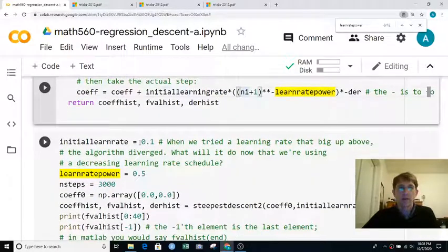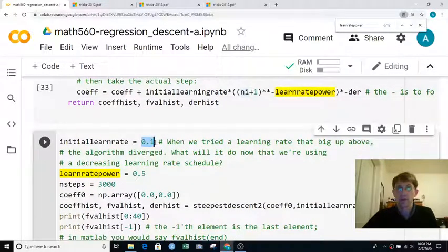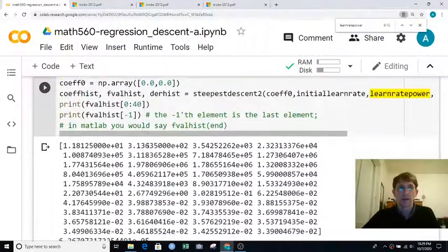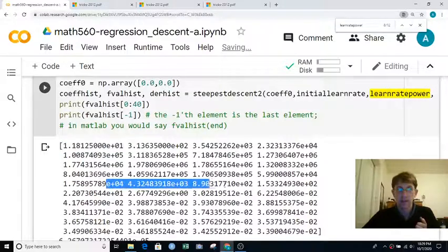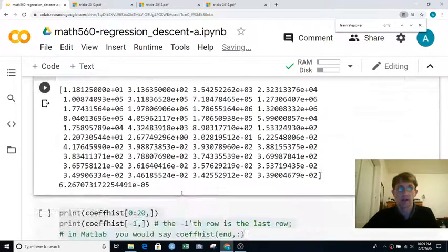So now let's try an initial learning rate of 0.1. When we tried that above, the optimization just diverged, but we're going to use a learning rate decay now. We'll use 1 over the square root of the current time step and let's see what happens there.